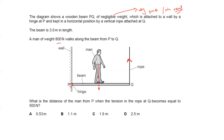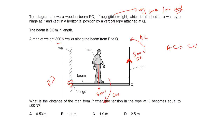Tension is the force applied through a rope — so tension in the rope is 500 newtons. With P as the pivot (hinge), the weight of the man (800 N) causes a clockwise rotation, while the rope tension (500 N) causes an anti-clockwise rotation. Since the beam is balanced, anti-clockwise moment equals clockwise moment.